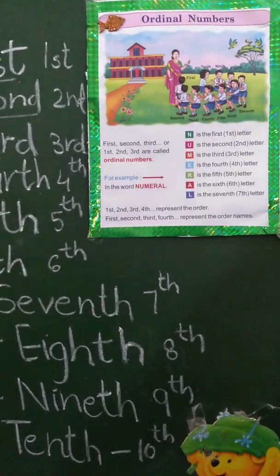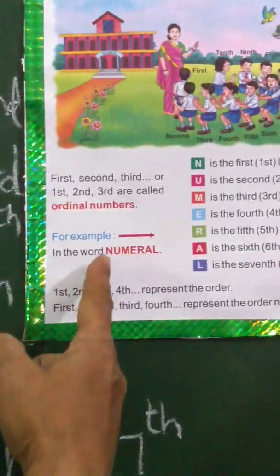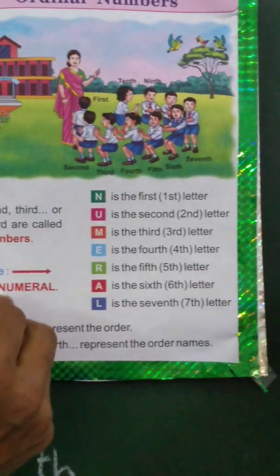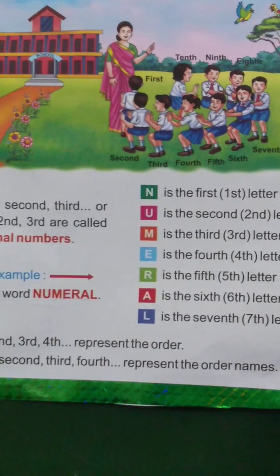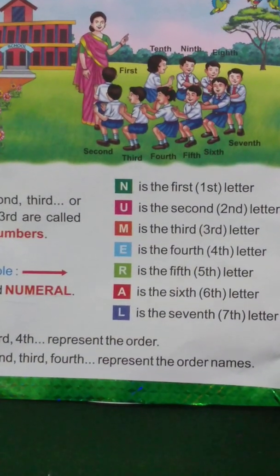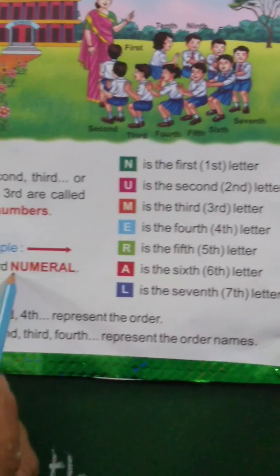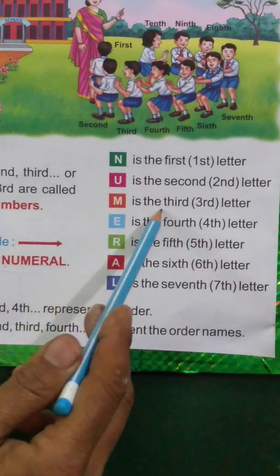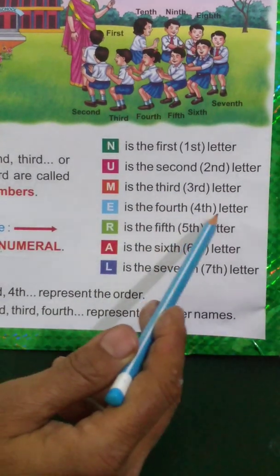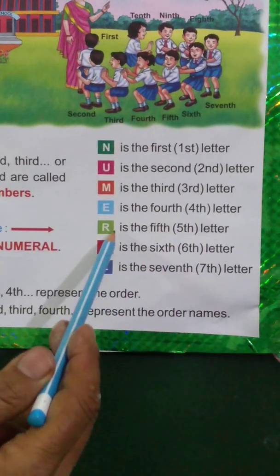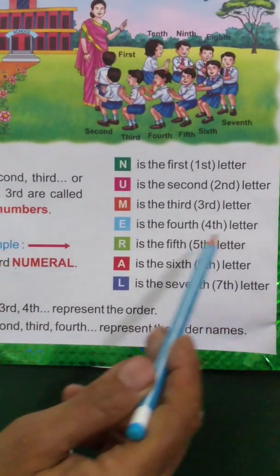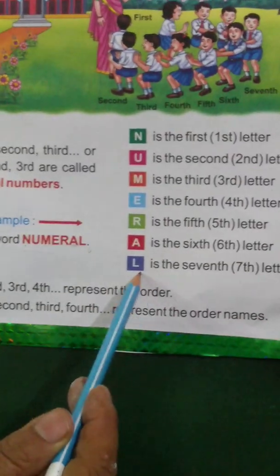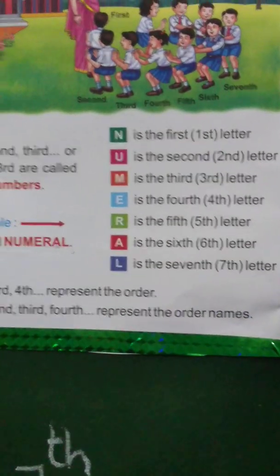Let us see one more example. In the word 'numeral', N is the first letter, U is the second letter, M is the third letter, E is the fourth letter, R is the fifth letter, A is the sixth letter, and L is the seventh letter.